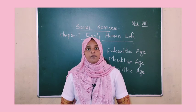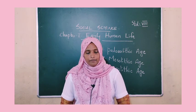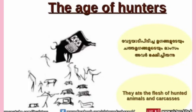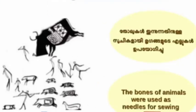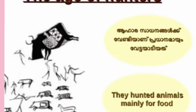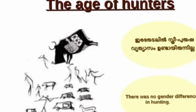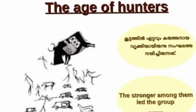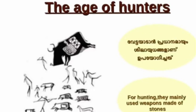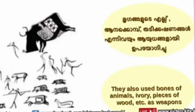The paleolithic age is known as the age of hunters because their main occupation was hunting. They ate the flesh of hunted animals and carcasses. The bones of animals were used as needles for sewing. They hunted animals mainly for food, and paleolithic humans hunted collectively. There was no gender difference in hunting. The stronger among them led the group. They mainly used weapons made of stones, bones of animals, ivory, and pieces of wood.